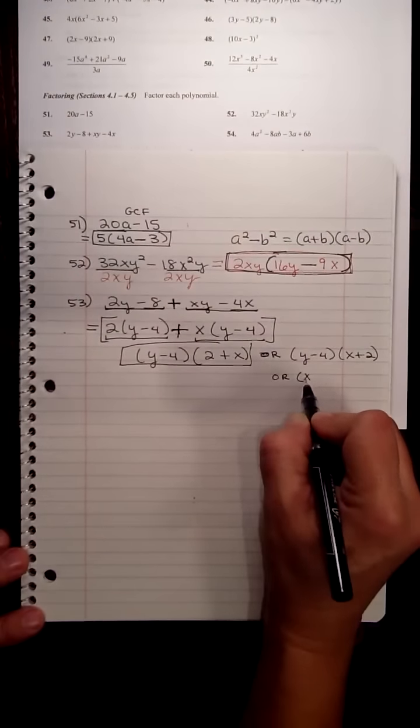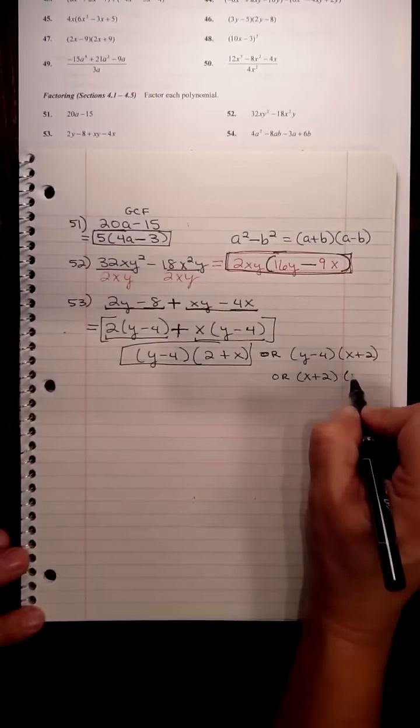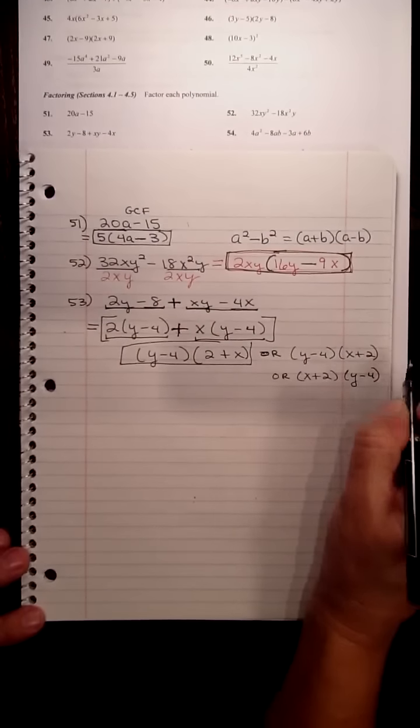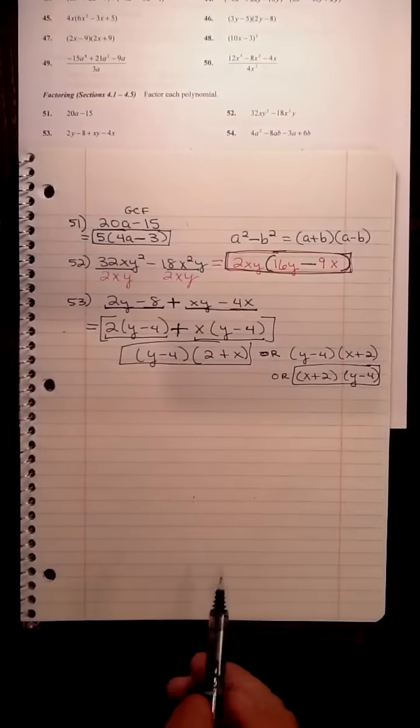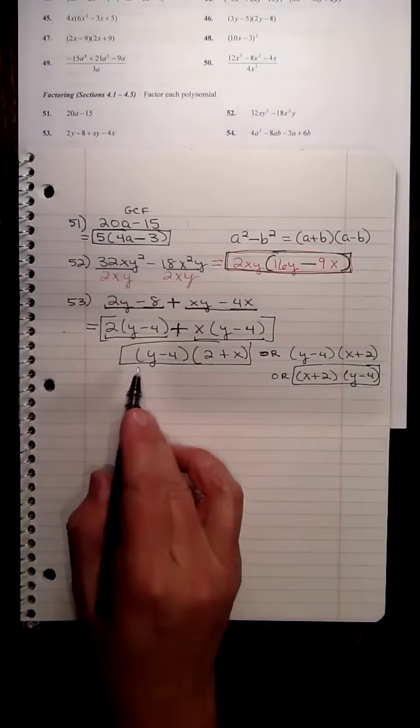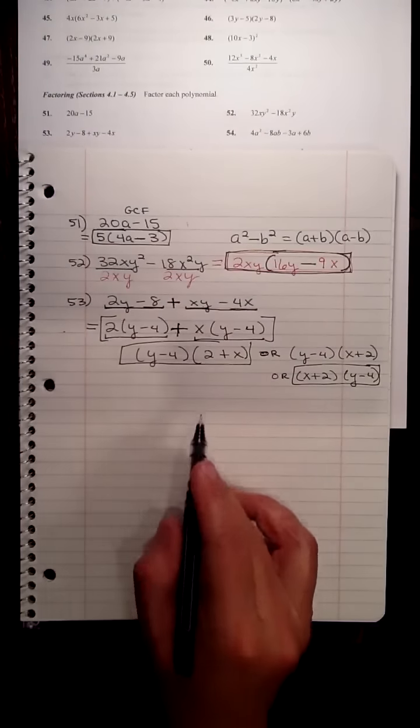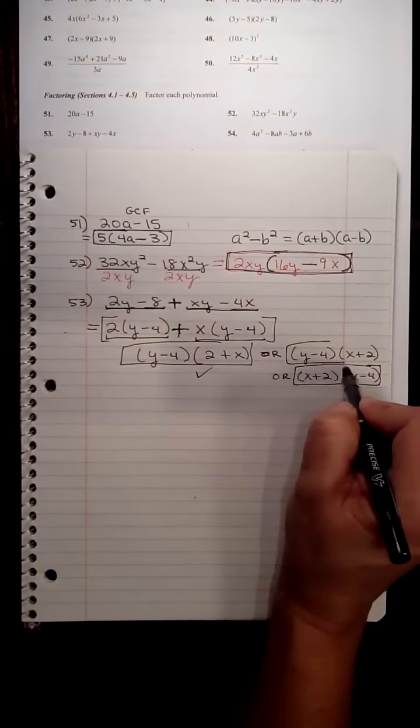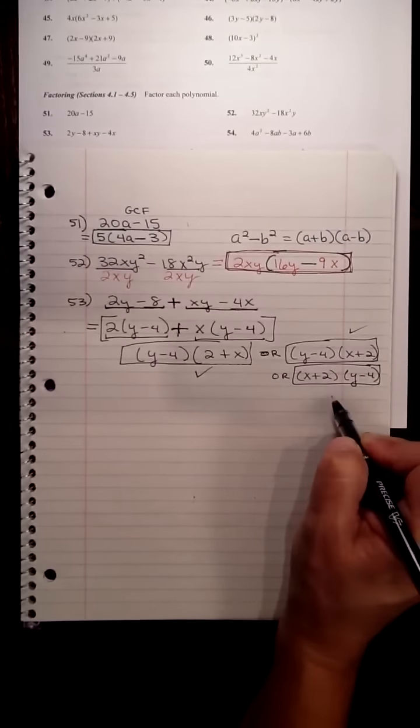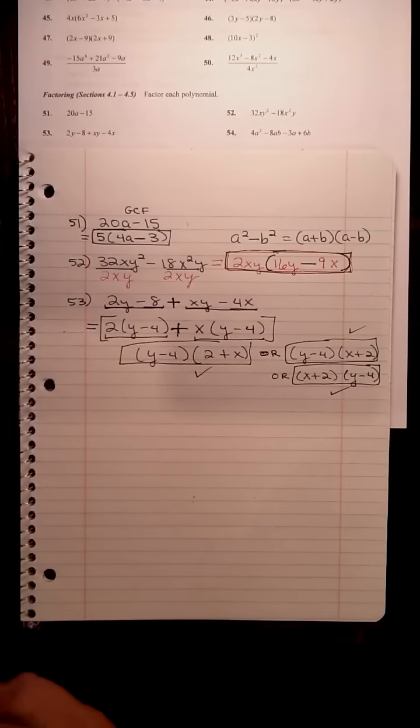Or, putting the x before the y, we could do that, but that is small potatoes, that doesn't matter. It's just the answer is y minus 4 is a separate factor from 2 plus x. So this would be fine on the test. All of these would be fine. Three different ways to express the answer.